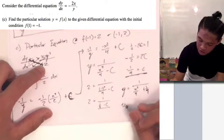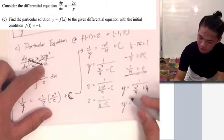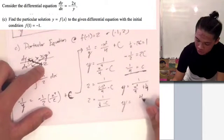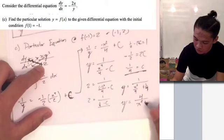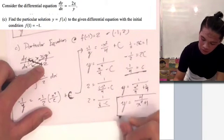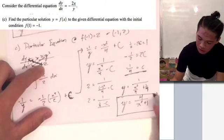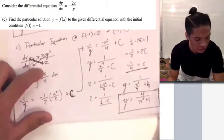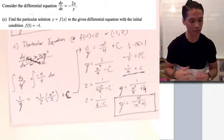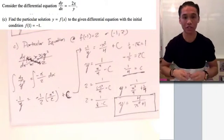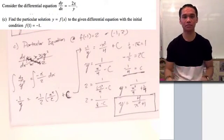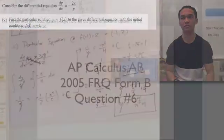Plugging C equals negative 1/4 back into the general equation gives y equals 1 over (x squared over 4 plus 1/4), which simplifies to y equals 4 over (x squared plus 1). And that's how we find the particular equation and how you answer question 6 from the 2005 AP Calculus AB test.